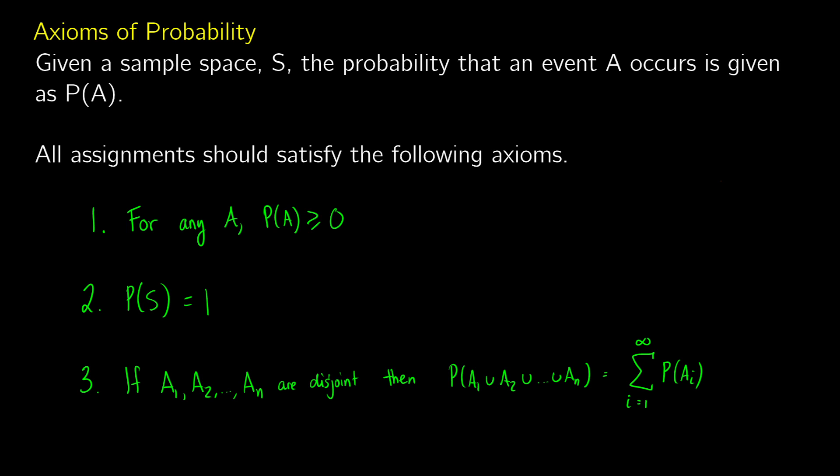Let's talk about the axioms of probability. If we have some sample space S and some event A occurring, we say that the probability that event A occurs is given as P of A. This is a function that assigns a probability to an event. Whenever you're looking at sample spaces and events, there are some axioms that should be satisfied.